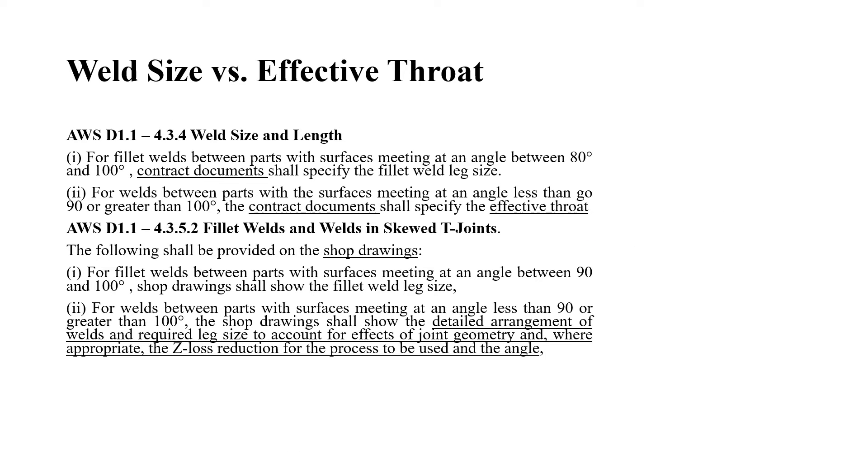According to the welding code, for welds between parts with surfaces meeting at an angle less than 90 degrees or greater than 100 degrees, the contract document shall specify the effective throat. However, on the shop drawings, the detail arrangement of welds are required to account for the effect of joint geometry and the z-loss reduction for the process to be used and also the dihedral angle. So if you are a structural engineer and provide the design of steel connections, you must specify the effective throat on the sketch.